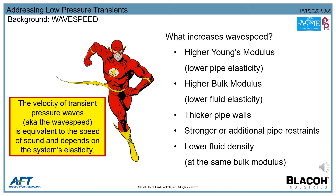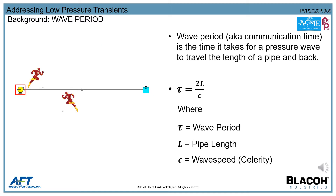In the case of low pressure transients, a higher wave speed will generate a lower drop in pressure. A transient wave's period, also known as the communication time, is essentially the time it takes the pressure wave to travel out and reflect back. When a wave reflects backwards, it can bring some relief to the initial pressure rise or drop. Generally, systems with longer wave periods tend to experience more significant surge spikes and dips, because the full extent of the velocity change is realized before the relieving wave returns.